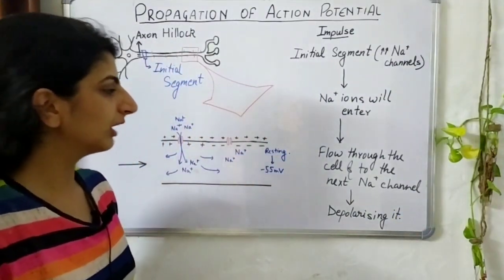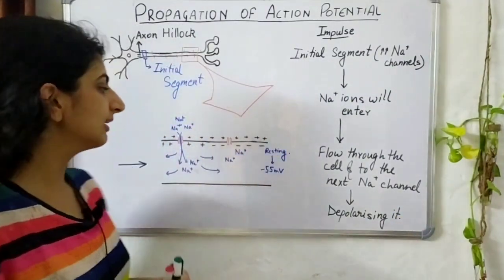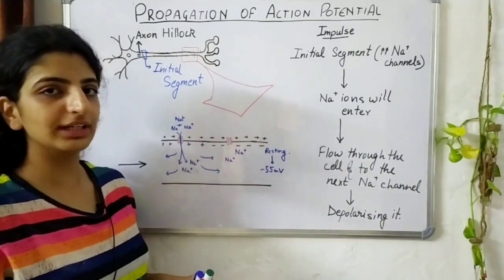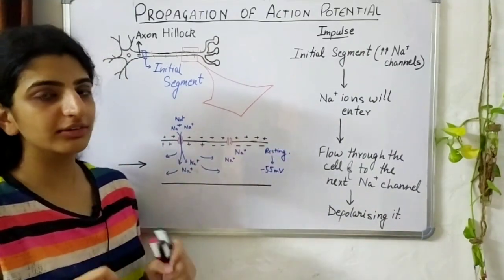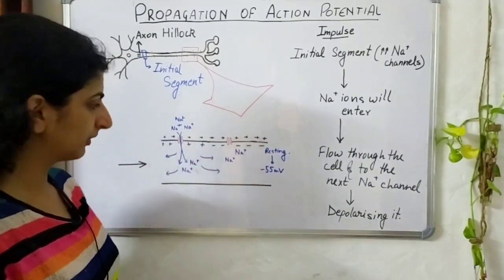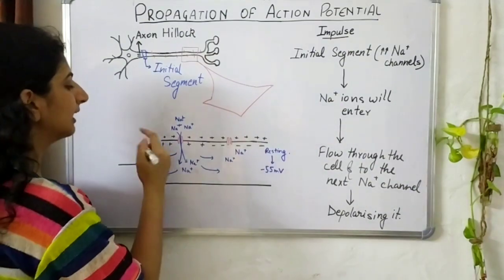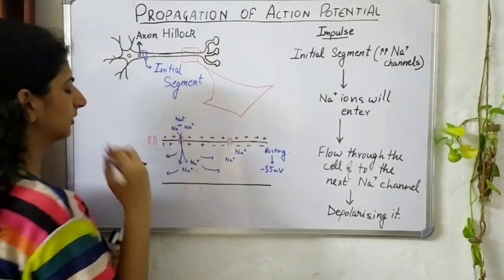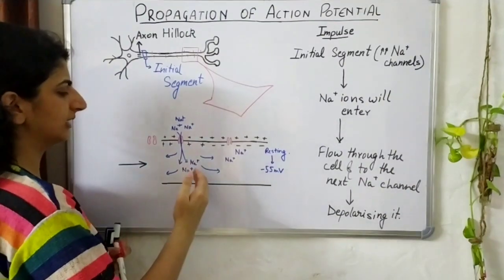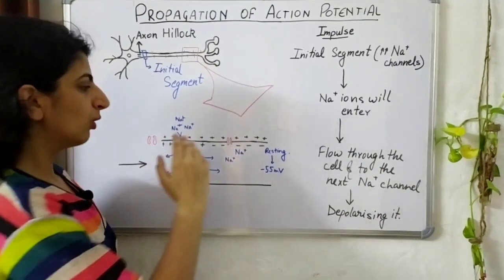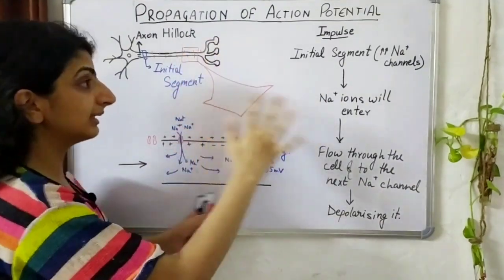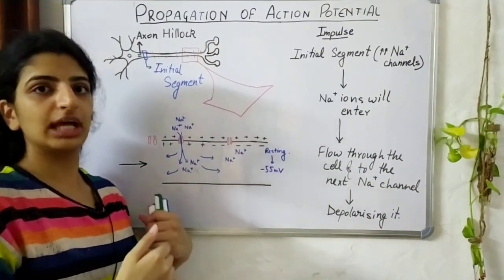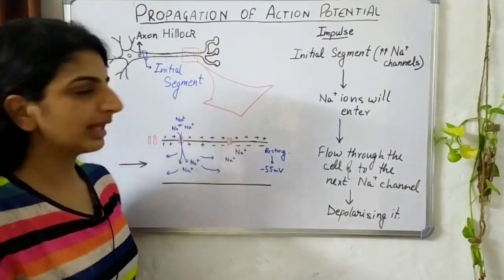One question that might come to your mind is that these sodium ions are not only moving in the forward direction but also in the backward direction. So what if there's another ion channel present behind the current one, and the sodium ions move back — won't the entire action potential start moving in the backward direction? That won't happen.